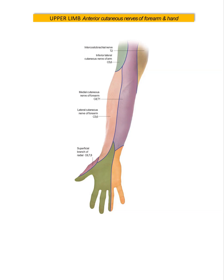The median nerve, C6, C7, and C8, gives a digital branch and a palmar branch. The digital branch supplies the lateral three and a half fingers, and the palmar branch supplies the lateral two-thirds of the palm. Then the ulnar nerve, C8 and T1, supplies the medial one and a half fingers and the medial one-third of the palm.